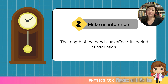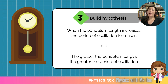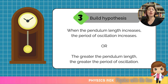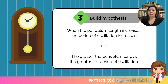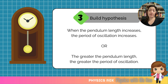Now that we have identified the two variables we want to study, we need to build a hypothesis. A hypothesis is a general relationship between the two variables showing the positive or negative trend. In this slide, I've shown you two ways you can write the hypothesis. You can write: when the pendulum length increases, the period of oscillation increases. Or: the greater the pendulum length, the greater the period of oscillation.